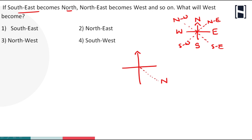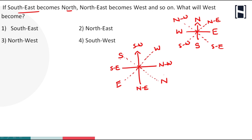Northeast becomes west. North opposite is south side and west opposite is east side. North and east middle is northeast direction, south and east middle is southeast direction, south and west middle is southwest direction, north and west middle is northwest direction. So what will west become?